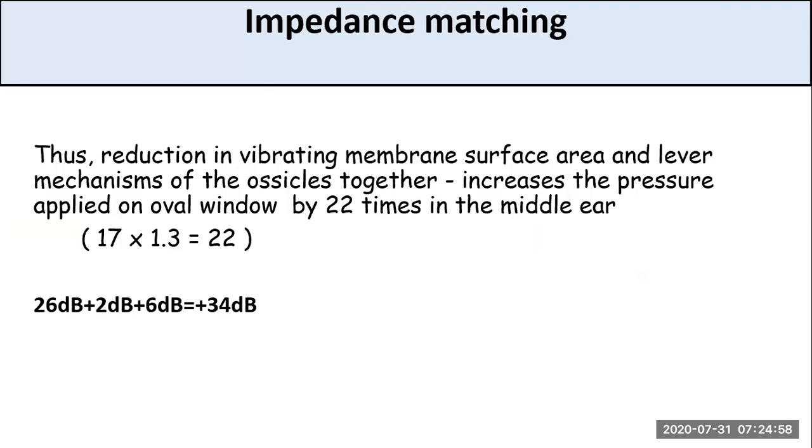The reduction in surface area of the tympanic membrane and oval window and the leverage mechanism of the ossicles together increase the pressure applied on the oval window by 22 times in the middle ear. 17 times by the surface area difference and 1.3 by the ossicular lever system, so total 22 times increase in pressure. The total increase in pressure at the footplate of the stapes is 22 times and also by the curved membrane mechanism. The increase is sufficient to overcome the impedance of the fluid to cause vibration in the fluid of the inner ear. So 26 decibels by surface area difference, 2 decibels by ossicle leverage mechanism, and 6 decibels by curved membrane mechanism. Total increase in pressure is approximately 34 decibels.